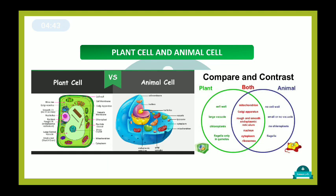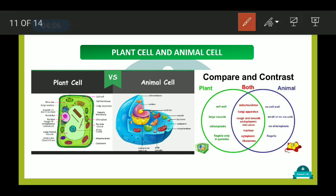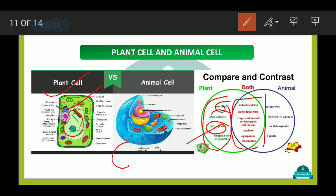Comparing plant and animal cells, we find that some structures are present only in plant cells: the cell wall, the large vacuole, and the chloroplast — which is responsible for the green color of plants. These are absent in animal cells. Flagella are present only in gametes in animal cells.